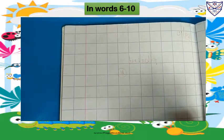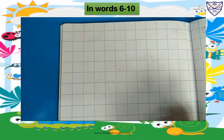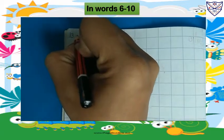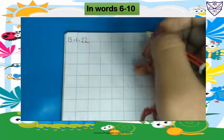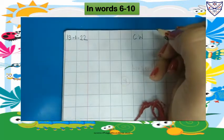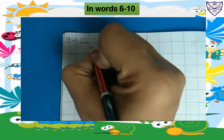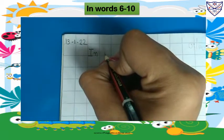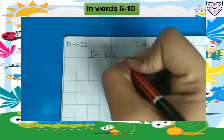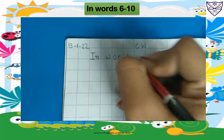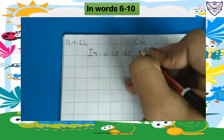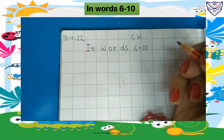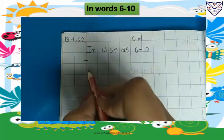Today we will write in words 6 to 10 in the square line notebook. Write here today's date, that is 13-1-22. Write here 'classwork'. In the next line we will write the heading: 'In Words, words 6 to 10.' Now leave one line and we will start from here.